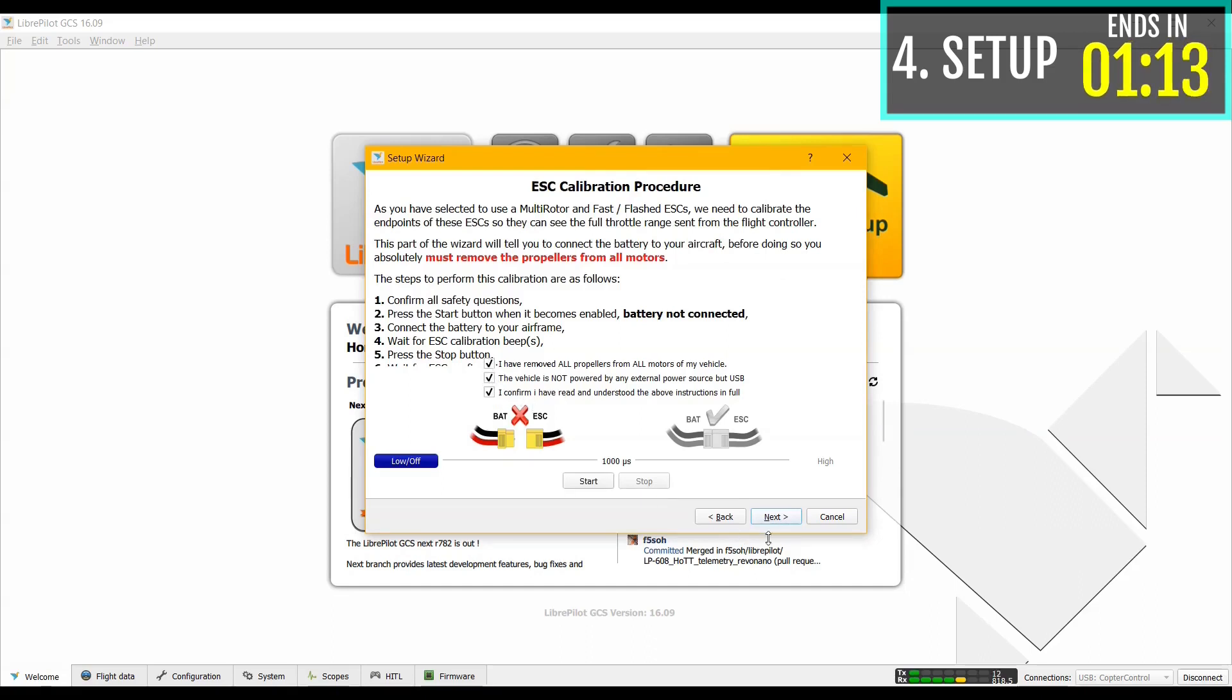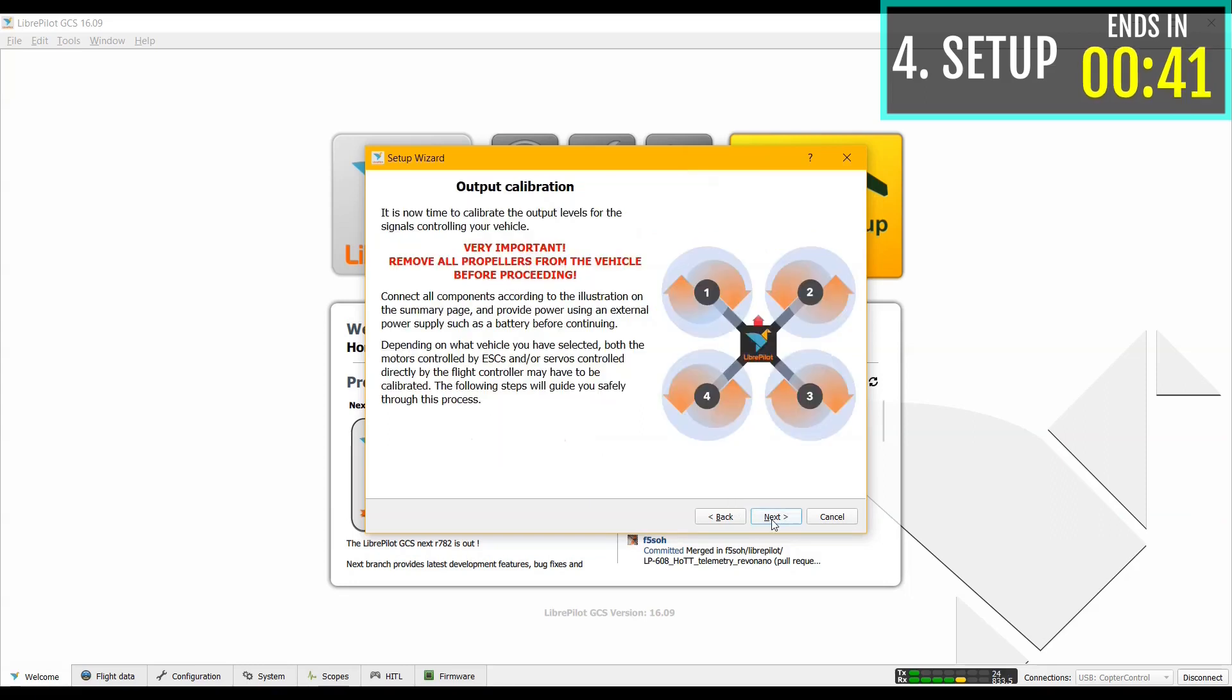Select these three boxes and before clicking start, make sure your battery is disconnected. Then press start. After pressing start, attach your battery. And you will hear a sound. Then stop. Select the last box and click next.